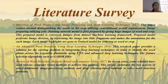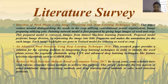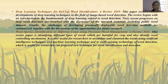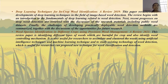The third paper is 'Review of Weed Detection Methods Based on Computer Vision,' published in 2017. This is a review paper that collects different papers published on the same topic, compares them, and highlights the differences and challenges faced. The fourth paper is 'Deep Learning Techniques for In-Crop Weed Identification — A Review,' published in 2019. This is also a review paper comparing earlier published works and identifying their challenges.